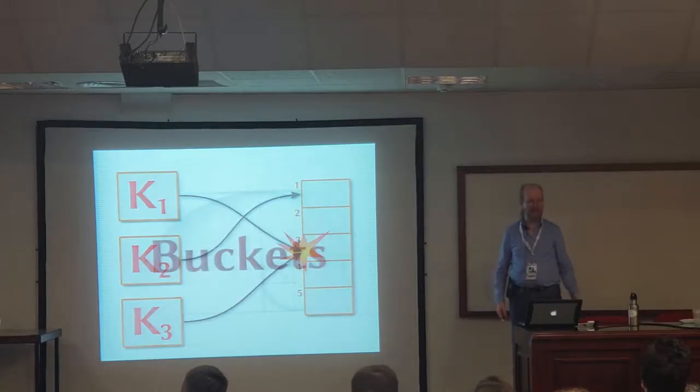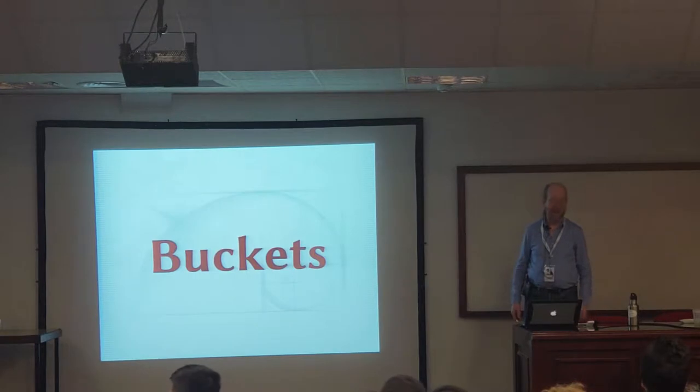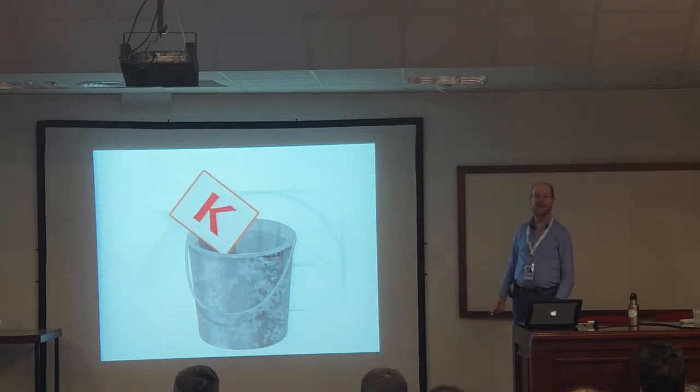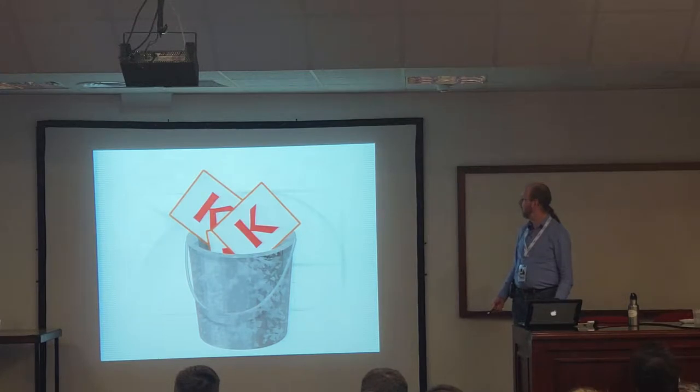Collisions. Here we have a five-element table, which is actually pretty typical size in most Smalltalk implementations for a new empty table. We're going to add a few keys. First key maps to three, second key maps to one, third key maps to three. Boom. How do we handle this? There are two basic strategies for handling collisions in hash tables. You can put more than one key into the same slot, cram more than one key in there, or you can find an empty slot somewhere else in the table.